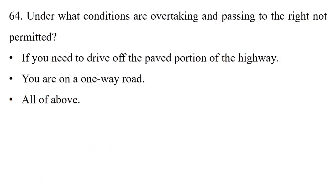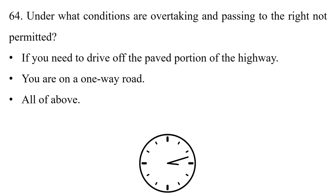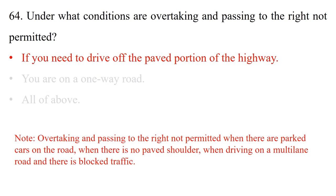Question: Under what conditions are overtaking and passing to the right not permitted? Option 1: If you need to drive off the paved portion of the highway. Option 2: You are on a one-way road. Option 3: All of the above. The answer is option 1: if you need to drive off the paved portion of the highway. Overtaking and passing to the right is not permitted when there are parked cars on the road, when there is no paved shoulder, when driving on a multi-lane road, and when there is blocked traffic.